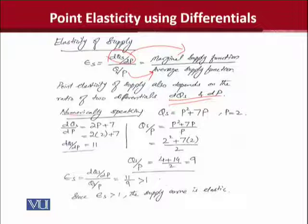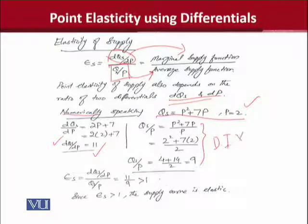Numerically speaking, if we have this function of supply and there is a price which is fixed at 2, we can get the value of the derivative, that is dQS divided by dP. The value of it is equal to 11, which we can note. And on the right side what you see is the ratio of QS and P. Substituting the values, QS over P is equal to 9. These steps you can verify by doing it yourself.